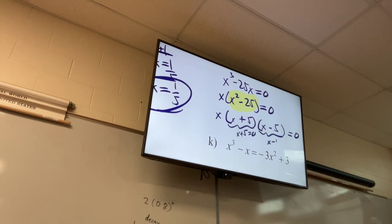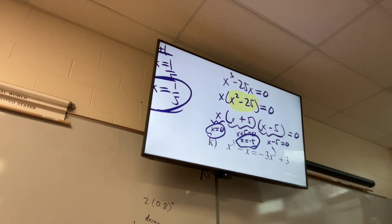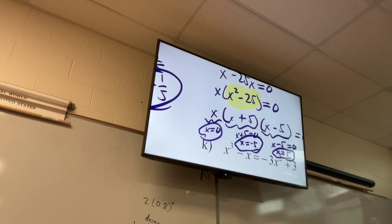Don't forget to set this x equal to zero as well because that's its own factor. So your answer is x equals 0, x equals negative 5, and x equals positive 5. Don't forget to set that x that's sitting there equal to zero.